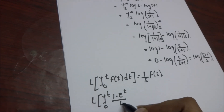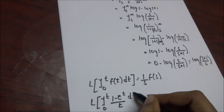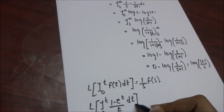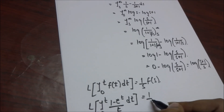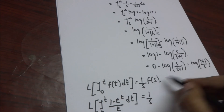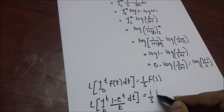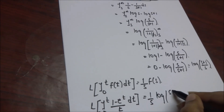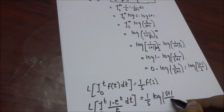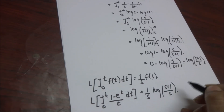Therefore, the given problem, Laplace of the integral from 0 to t of (1 - e^t)/t dt, is equal to 1/s into F(s), which gives log((s+1)/s)/s.